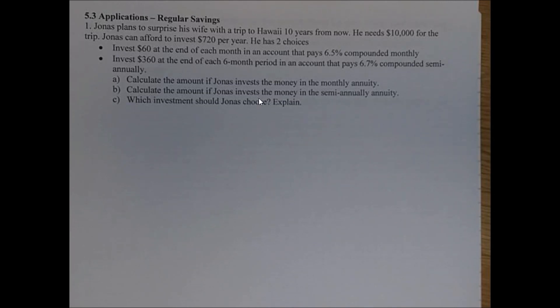Jonas can afford to invest $720 per year. So every year for the next 10 years, at the end of the year, he's going to invest $720. He's got a choice. You can either put $60 at the end of each month. So 60 times 12 versus $720.